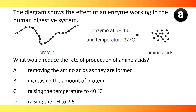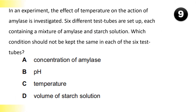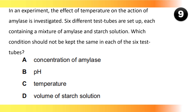The diagram shows the effect of an enzyme working in the human digestive system. What would reduce the rate of production of amino acids? Raising the pH to 7.5.